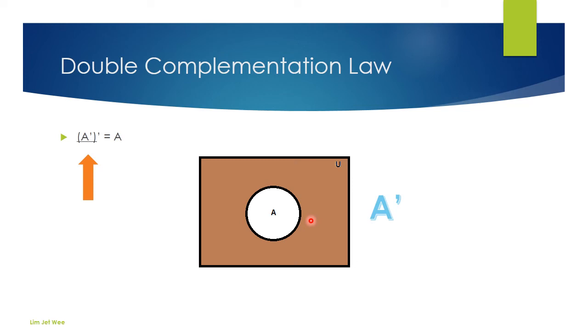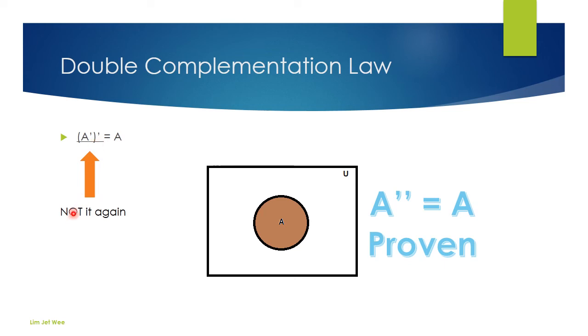But I still have another not outside, so I need to not it again. So I take the previous answer and I not it again, which means not the previous shaded outside, which goes back to A.